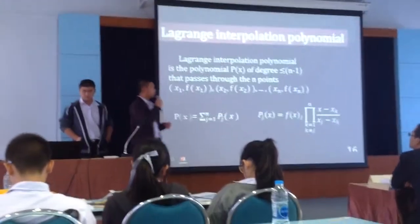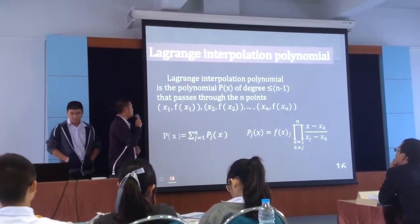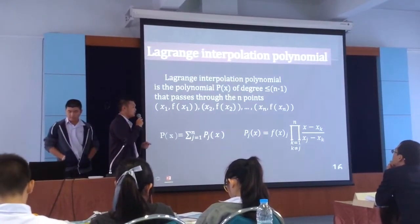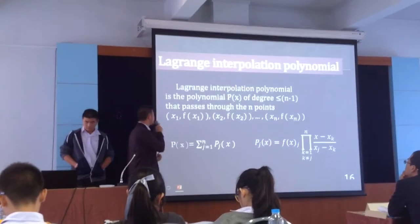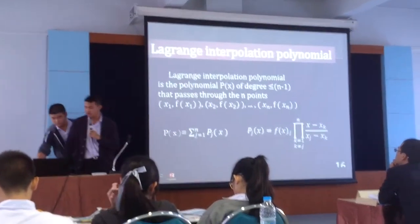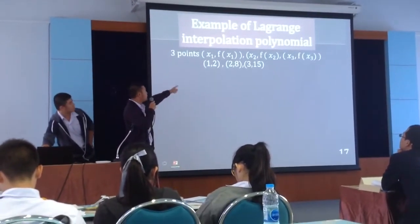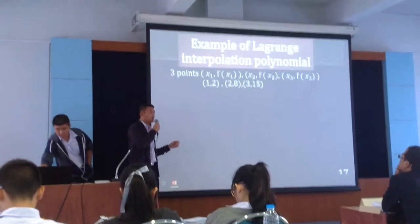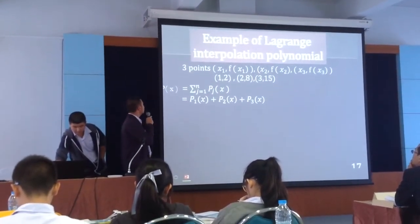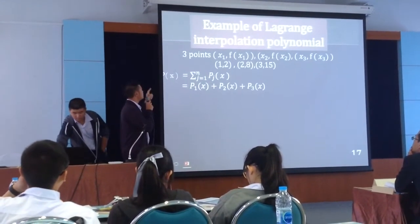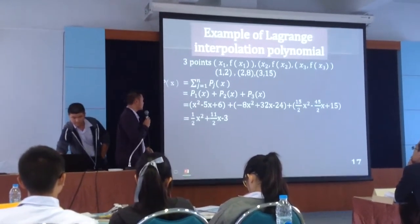The theory that our group uses is Lagrange Interpolation Polynomial. The polynomial P of degree less than or equal to n minus 1 passes through n points. Example of Lagrange Interpolation: if we have numbers 2, 8, and 50 and we want to find the polynomial, we can use Lagrange Interpolation Polynomial.